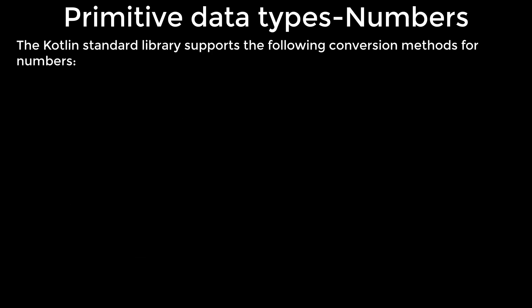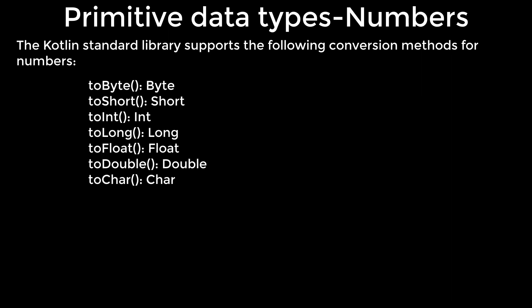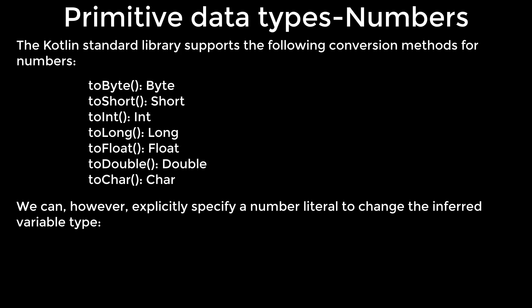The Kotlin standard library supports the following conversion methods for numbers. We can, however, explicitly specify a number literal to change the inferred variable type.